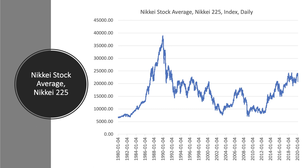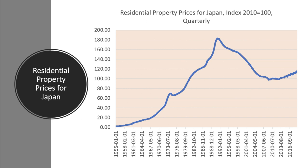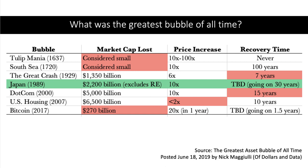Perhaps the biggest speculative bubble of all time was what happened to Japanese share and house prices from the early 1980s onwards. There was a decade-long surge in share prices — look at the Nikkei stock index from 1980 onwards — an absolute surge until about 1990–91, when share prices collapsed. They have come nowhere close to that level in the following 30 years. Residential property prices in Japan similarly surged from the 1980s onwards, peaked in 1990–91, and then collapsed, with no sign of getting anywhere close to that previous bubble-induced peak.